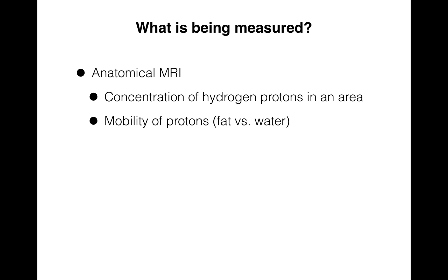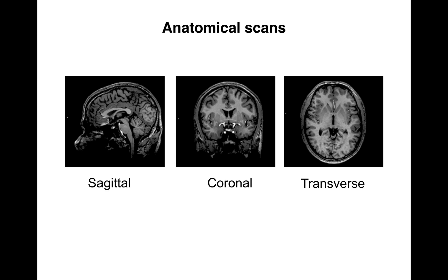In an anatomical MRI, we're measuring the concentration of hydrogen protons in a particular area. The signal is also sensitive to the mobility of those protons — for example, if they're floating as part of water or embedded in fats. Here are some nice examples of anatomical scans and just how pretty they can look with nice levels of detail of all kinds of different brain structures.